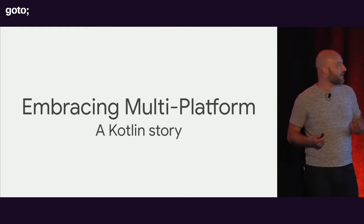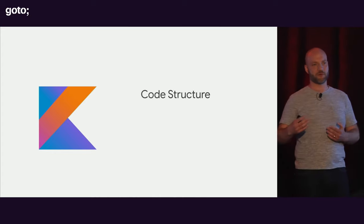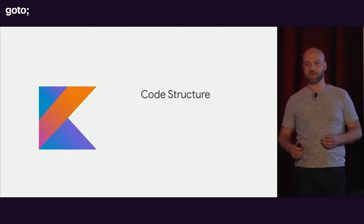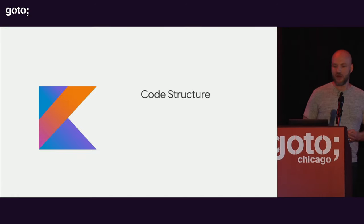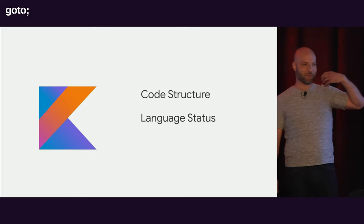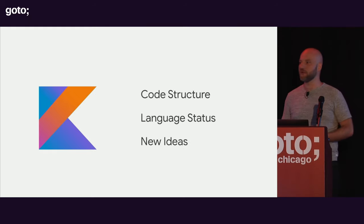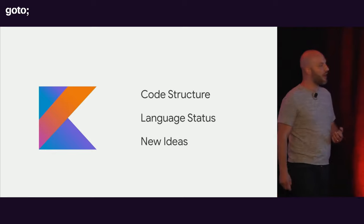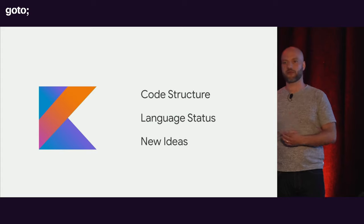I want to just talk about multi-platforms, so let's dive in. What I'm going to talk about today I'll break into three parts. I'm going to talk about the code structure that you can build with a multi-platform solution, what sort of things you can make run on both platforms, and what sort of things maybe don't make sense to make multi-platform today with the libraries that exist. Then we'll talk about the language status, and I'll talk about some of the new ideas that are in Kotlin Multiplatform that you'll need to embrace to write code with it.